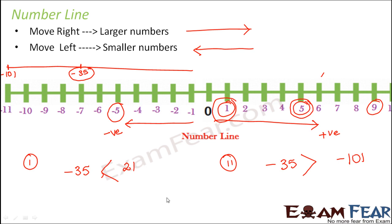Let us look at one more example: minus 16 and minus 61, which is bigger? Both are negative, so forget about the sign and consider just the value. Which is smaller: 16 or 61? 16 is the smaller value, therefore minus 16 will be greater than minus 61. This is a very simple concept. To summarize the tips: any positive number will always be greater than any negative number. If you have both numbers negative, forget about their sign, compare the values, and the number which is smaller in value will overall be the bigger number.